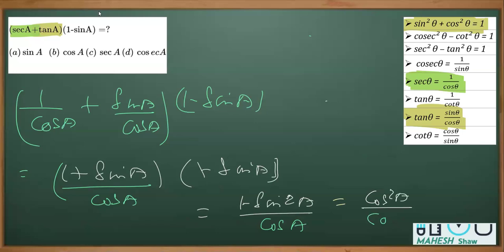We have this as cosA. Now cos²A divided by cosA simplifies to cosA. We can see that option B is the correct answer.